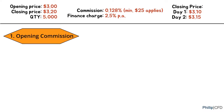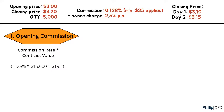To calculate the Opening Commission, we use Commission Rate times contract value, which gives us $19.20. Since the minimum applies, the Opening Commission will be $26.75 after GST.